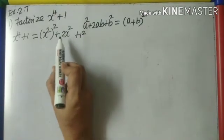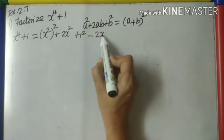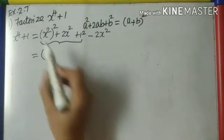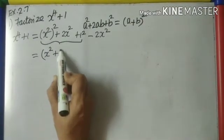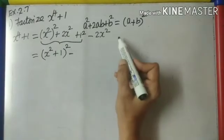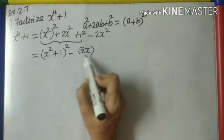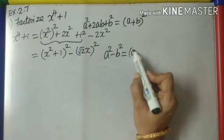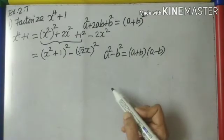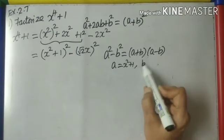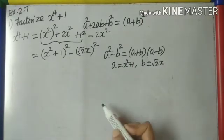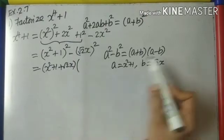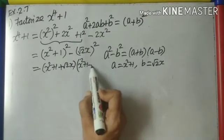Here a = x² and b = 1, so 2ab = 2x². We add 2x² to complete the square, but we must also subtract it. So: x⁴ + 1 = (x² + 1)² - 2x². Now 2x² can be written as (√2·x)². This is an a² - b² pattern, so factorize as (x²+1+√2x)(x²+1-√2x).